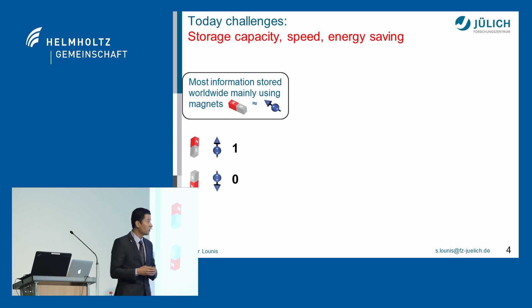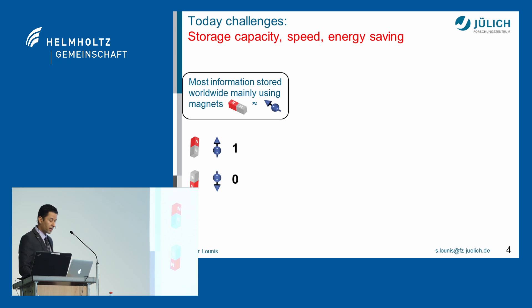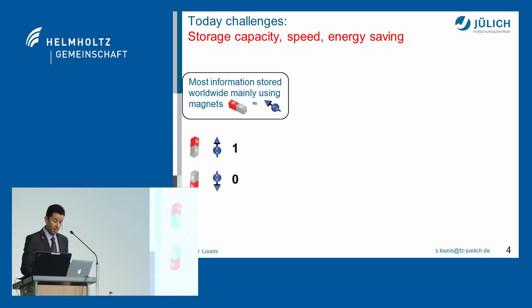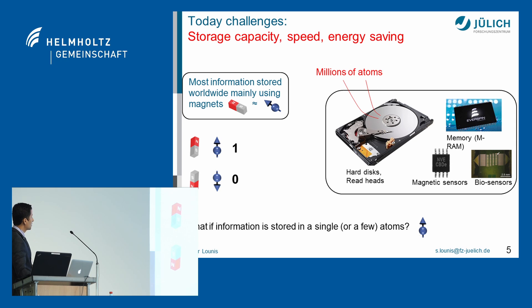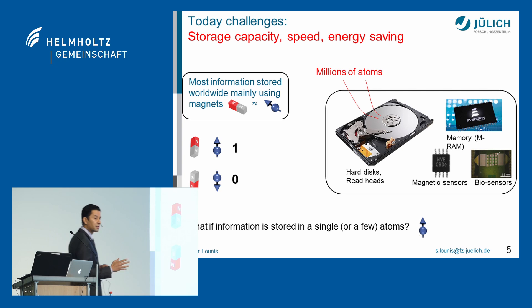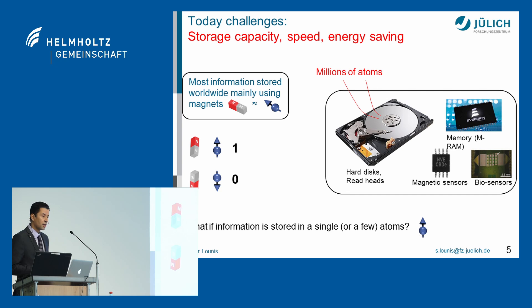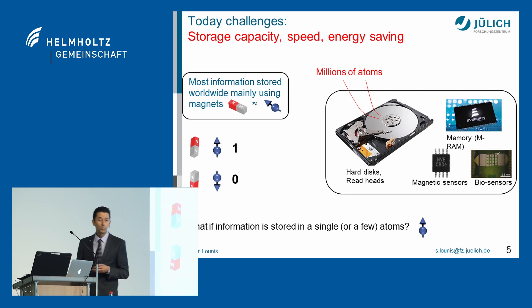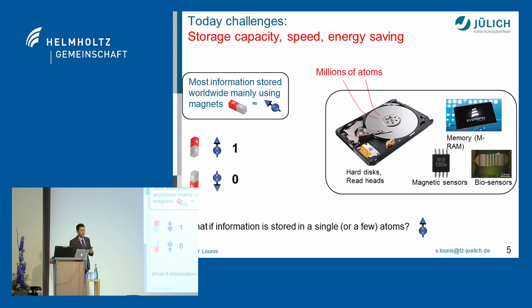These atoms can act as tiny magnets — they are characterized by a North Pole and a South Pole. This characteristic is used to store information in devices like a hard disk drive. When the North Pole points up, this corresponds to a bit of information 'one,' and the opposite to 'zero.' The sequences of ones and zeros define whatever you store in a hard disk drive.